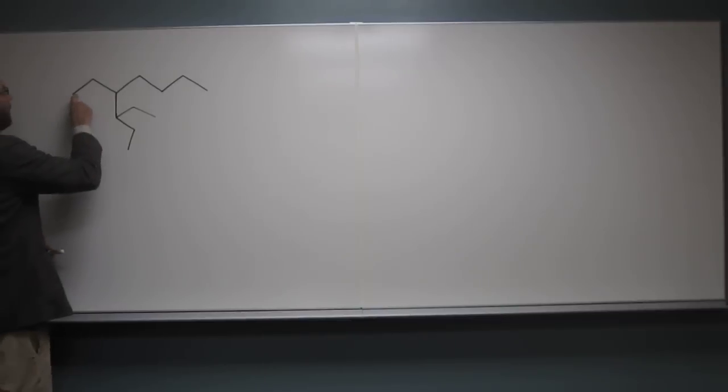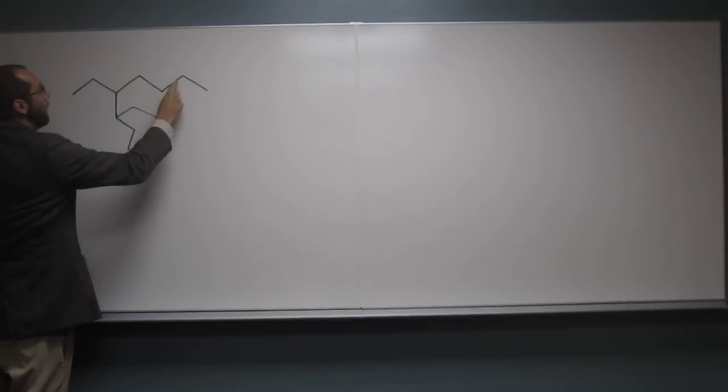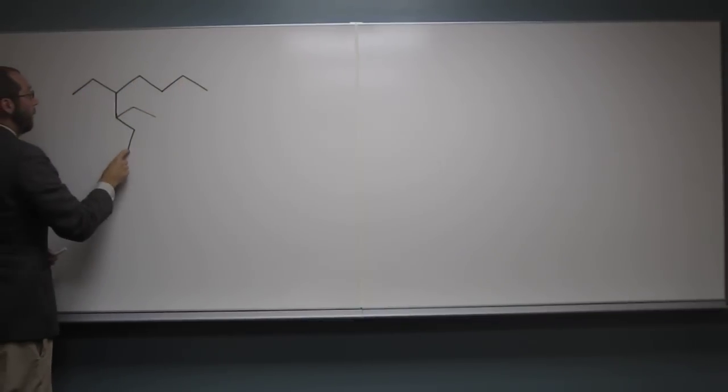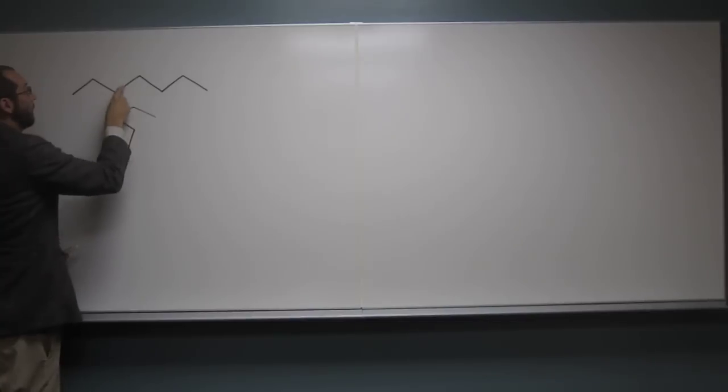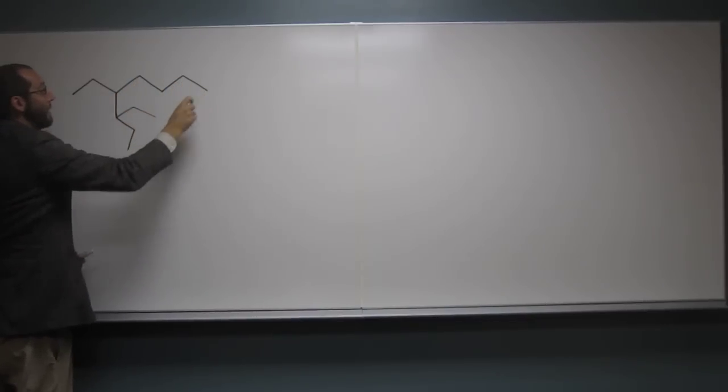So we're going to count 1, 2, 3, 4, 5, 6, 7. So there's 7 there. 1, 2, 3, 4, 5, 6, 7, 8 there, right?